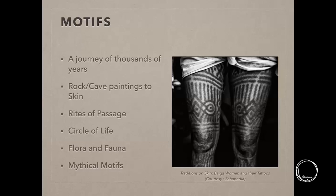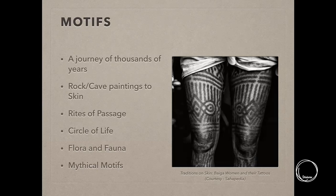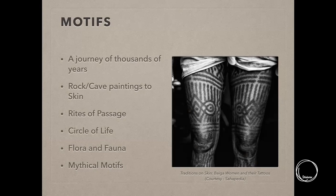There are also connections to healing and traditional medicine — for instance, a tattoo on the forehead is believed to help with eyesight problems. Different motifs carry different meanings across the tradition, which goes back thousands of years as seen in cave paintings and later transmitted onto skin. The motifs can be grouped into: rites of passage representing the circle of life and death, flora and fauna, and mythical motifs. Each individual motif carries its own specific meaning — for example, one tattoo specifically conveys 'wherever there is a will, there is a way.'